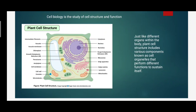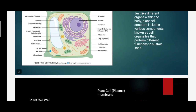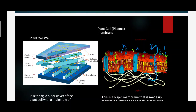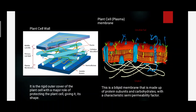In this plant cell structure, there are different cell organelles, and some are included in your syllabus. The first cell organelle included in your syllabus is the cell wall, or plant cell wall. The cell wall is the rigid outer cover of plant cells, with a major role of protecting the plant cells and giving them shape.